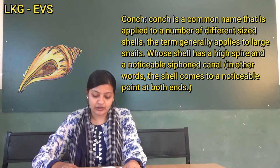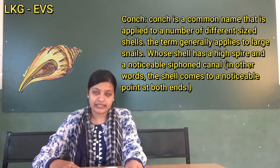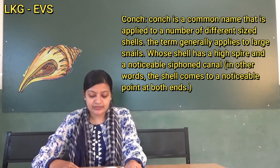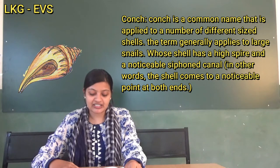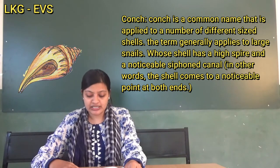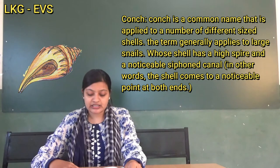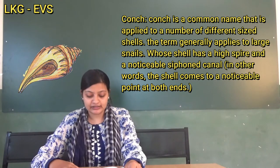Next, Conch. Conch is a common name applied to a number of different sized shells. The term generally applies to large snails whose shell has a high spike and a noticeable spinal canal. In other words, the shell comes to a noticeable point at both ends.